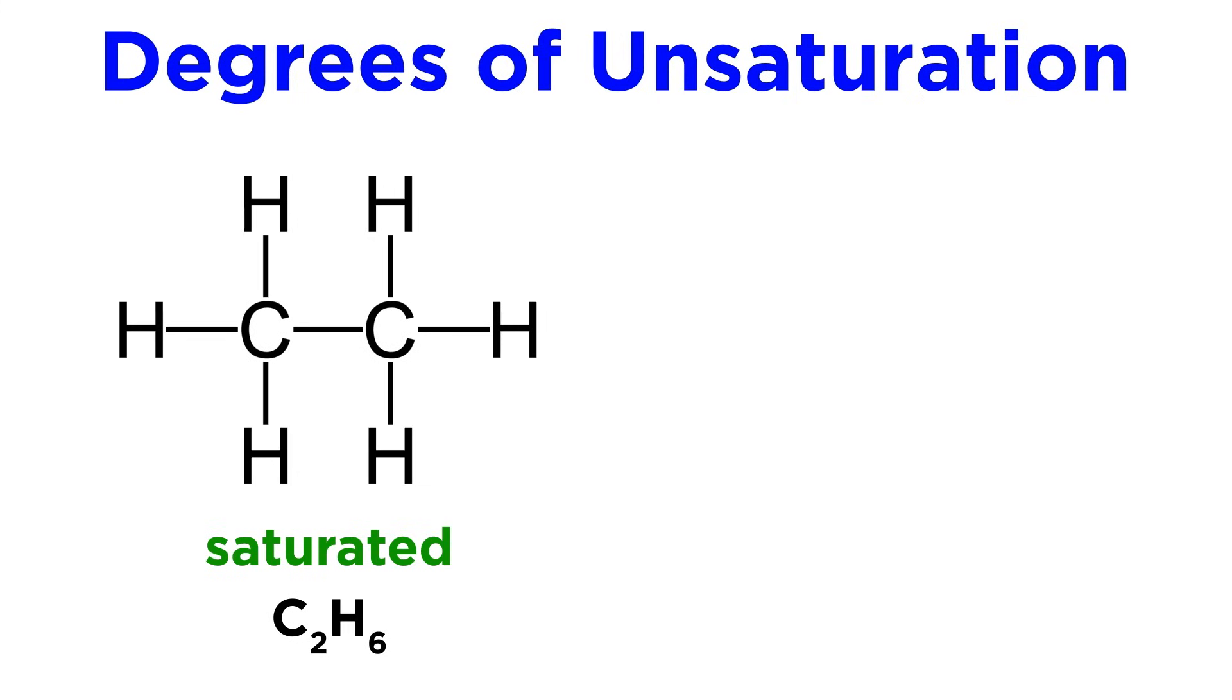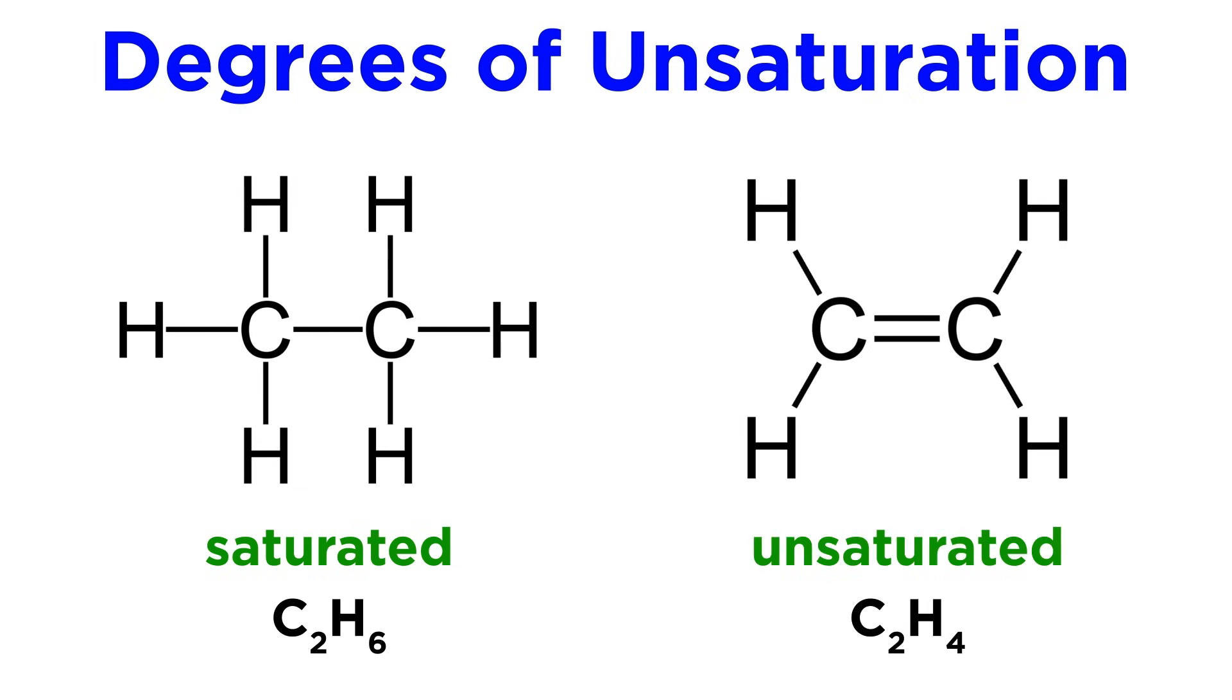So ethane C2H6 is fully saturated because the two carbon atoms can't have any more bonds to hydrogen atoms. Ethene or ethylene C2H4 has one degree of unsaturation due to the carbon-carbon pi bond. This pi bond is preventing two additional hydrogen atoms from coordinating.